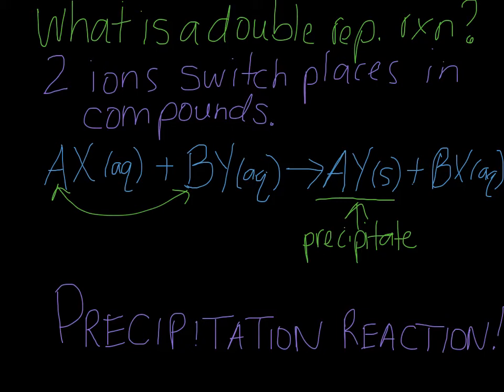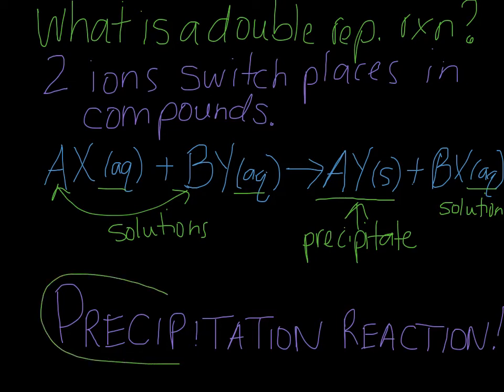The first two compounds — the reactants — are both aqueous, which means those are solutions; these are compounds that are dissolved in water. You mix these two solutions, and when you do this, the ions will switch places and form a precipitate, and what's left over is just another solution. This has a special name known as a precipitation reaction. You need to know this by name and be able to recognize it.